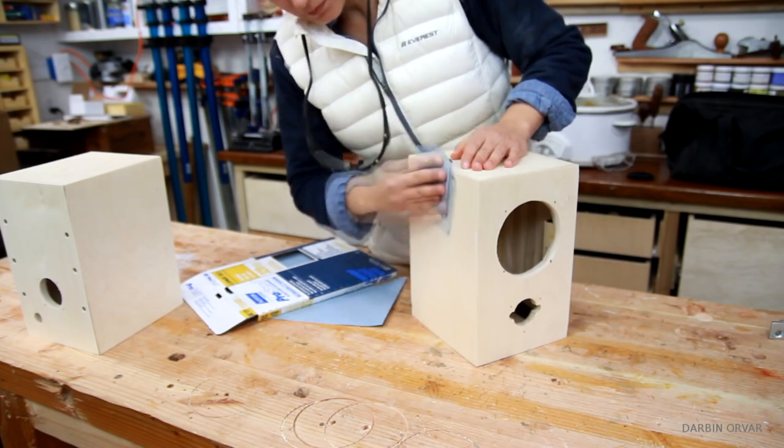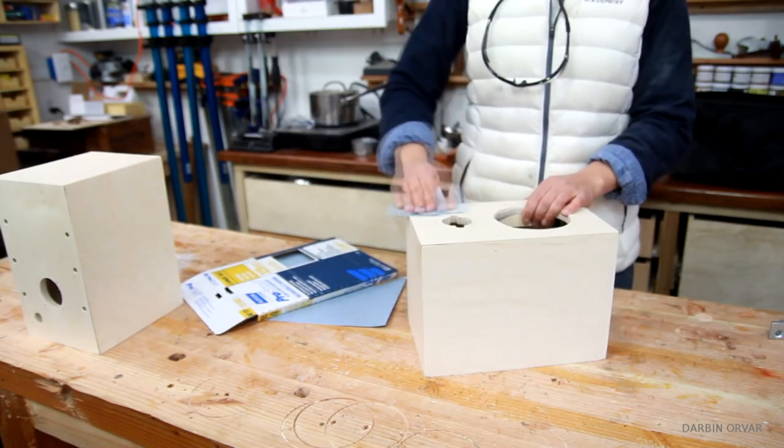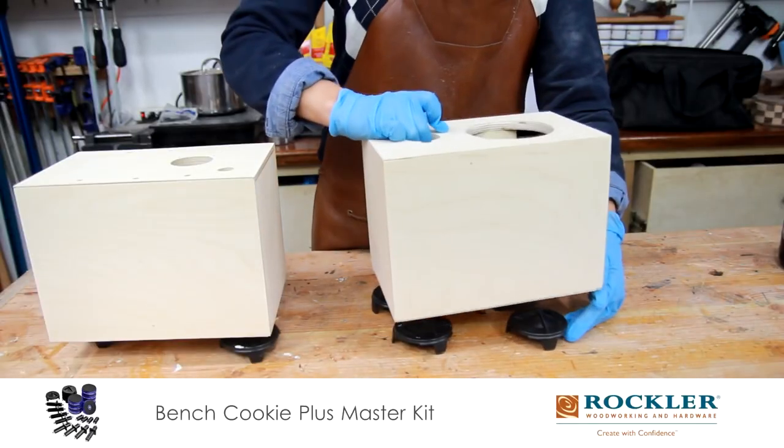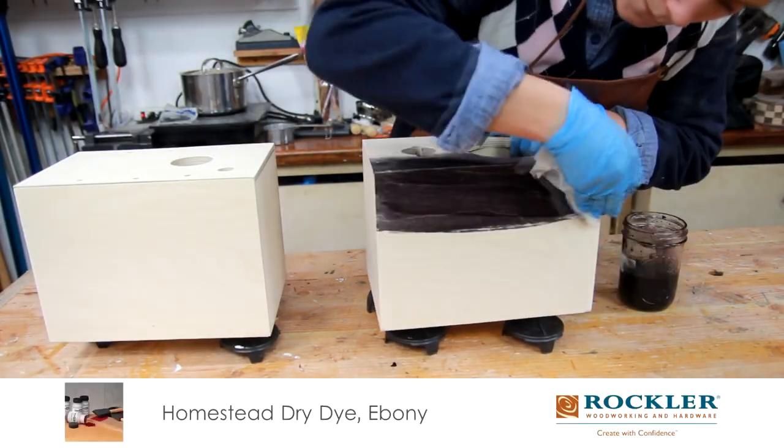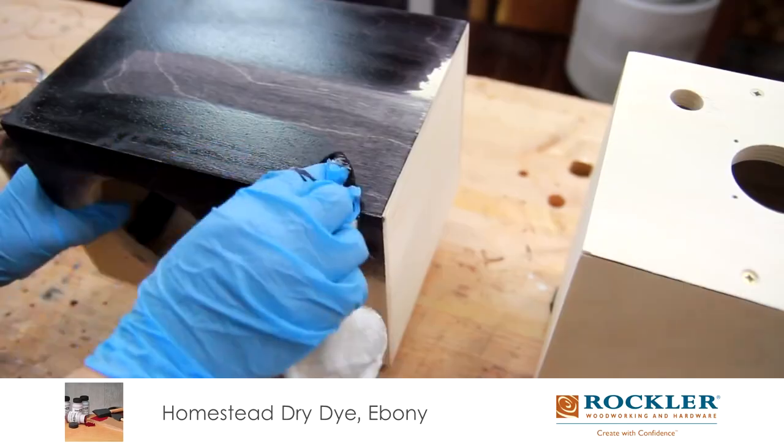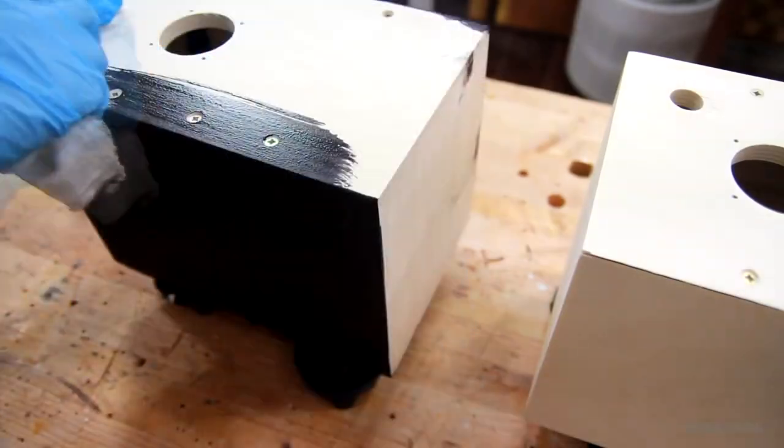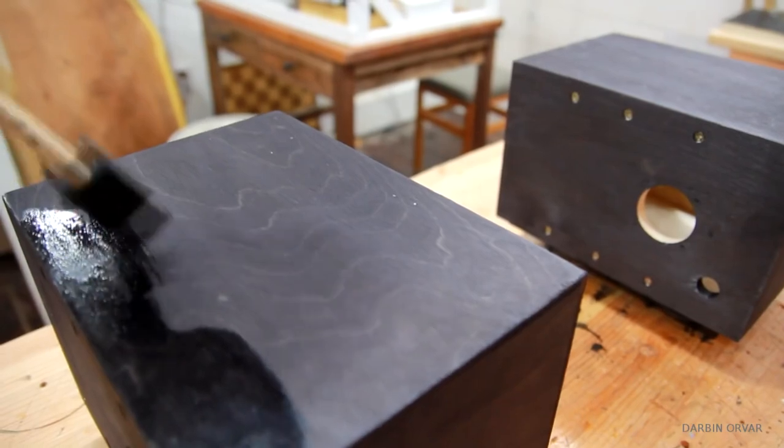Here you can see that I'm first raising the grain and sanding it down before applying the dye. I really like dye, it doesn't smell like stain, it dries really quickly and it really comes out great. For a top coat I went with shellac.